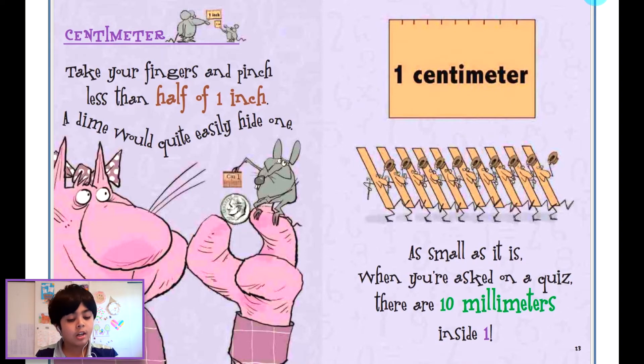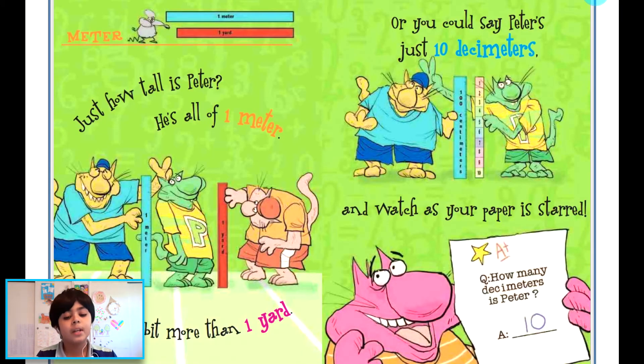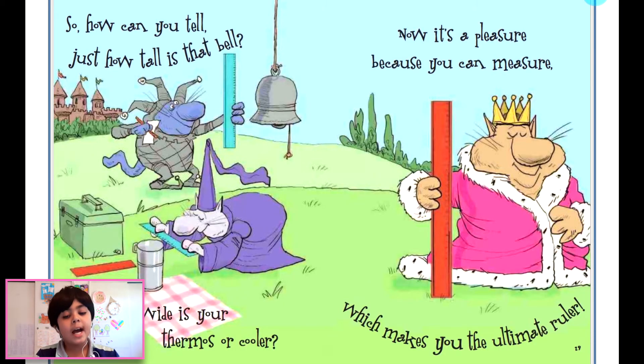A bit less than four inches, really no more, there are ten centimeters tucked in. A hundred would be the amount you would see of all the millimeters within it. Just how tall is Peter? He's all of one meter. It's a little bit more than one yard, or you could say Peter's just ten decimeters. And watch as your paper is starred.